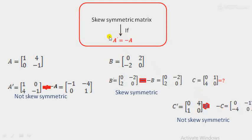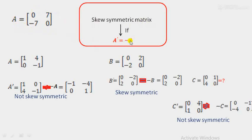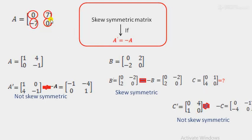Without verifying this condition formally, we can directly say whether a given matrix is skew symmetric or not. Because in a skew symmetric matrix, the diagonal elements are always 0, and the opposite off-diagonal elements are equal in quantity but opposite in sign.